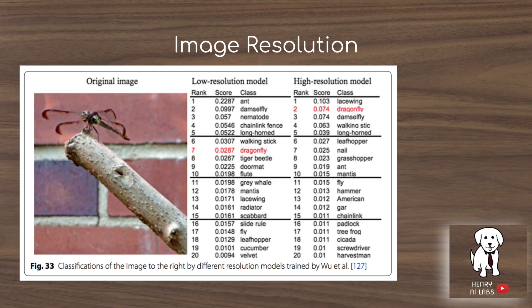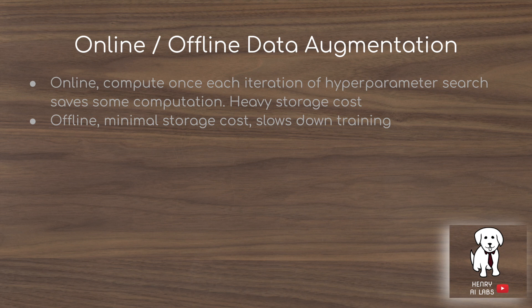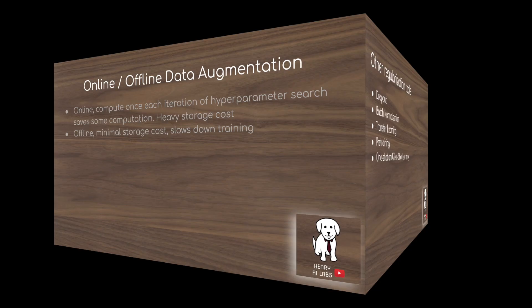One other consideration is online versus offline data augmentation. Online augmentation means images are augmented with some probability parameter as they enter the batch. Offline augmentation means images are augmented in preparation for training and then written to disk, which incurs a storage cost.